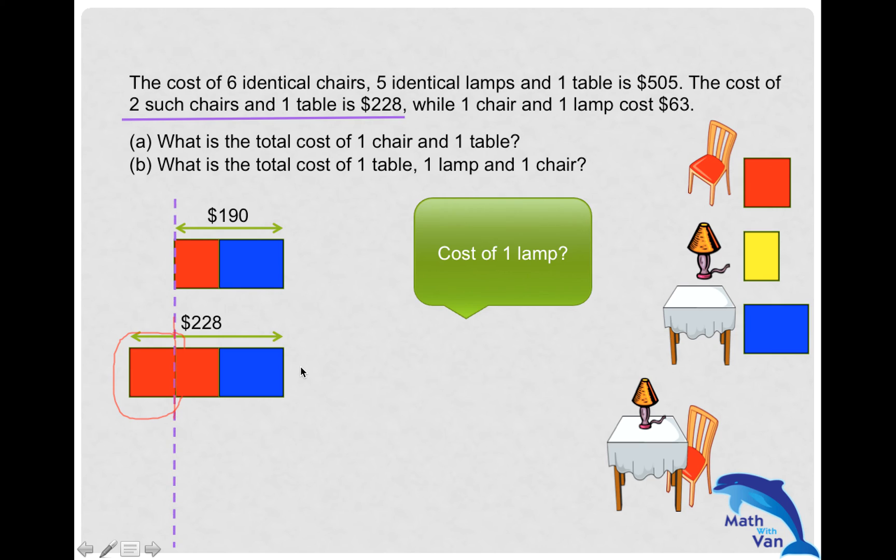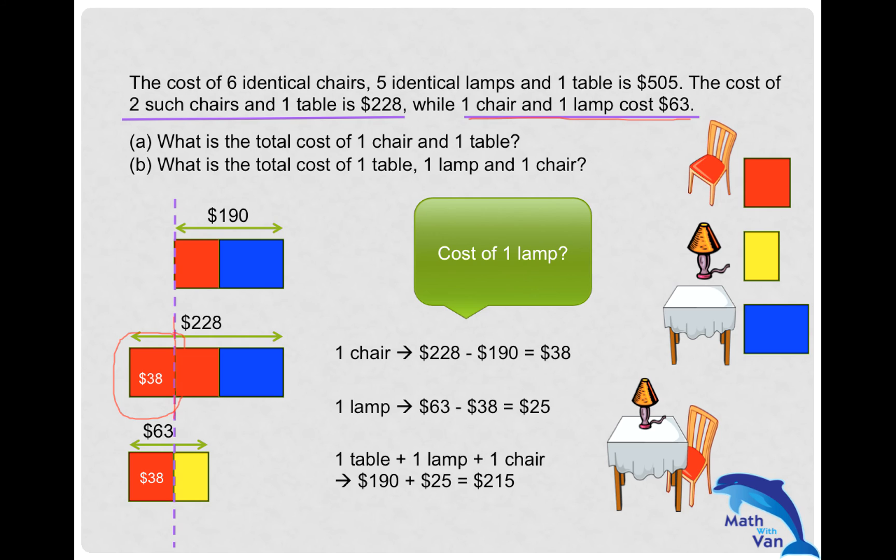Right now I have an additional chair. If I know the cost of it, $38, then analyzing the next statement: one chair and one lamp cost $63. Since the chair costs $38, finding the yellow block becomes easy: $63 - $38 = $25. That's it—you've found your answer to part (b).